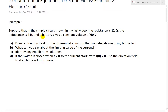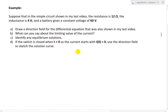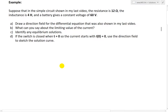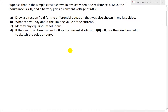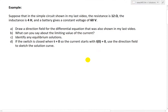This example states: suppose that in the simple circuit shown in my last video, the resistance in the resistor is 12 ohms, the inductance is 4 Henrys, and a battery gives a constant voltage of 60 volts. Part A says draw a direction field for the differential equation. Part B asks what you can say about the limiting value of the current. Part C is identifying equilibrium solutions. Part D says if the switch is closed when time equals zero so the current starts at i(0)=0, use the direction field to sketch the solution curve.